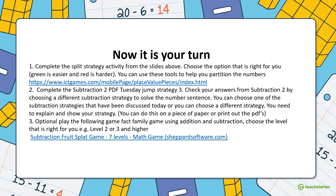Number two: complete the subtraction PDF — Tuesday jump strategy — to practice the jump strategy today. Then check your answers from subtraction two by choosing a different subtraction strategy to solve the number sentence. You can choose one of the strategies discussed today, or one from yesterday, or another one we haven't talked about yet. You need to explain and show your strategy. You can do this on a piece of paper or print out the PDFs.